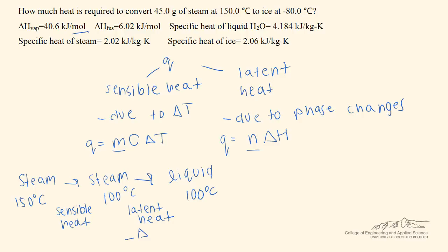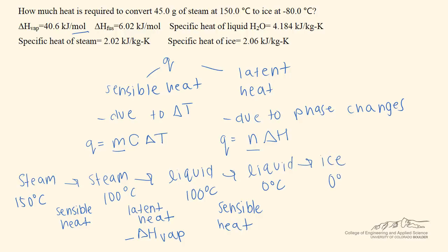For the steam-to-liquid transition, we use the negative heat of vaporization, because instead of converting from a liquid to a vapor, we're converting from a vapor to a liquid. Then we cool to liquid at 0 degrees Celsius, described by sensible heat. Next, we transition to ice at 0 degrees Celsius using latent heat with the negative heat of fusion, since the heat of fusion describes solid to liquid, but here we're going liquid to solid.